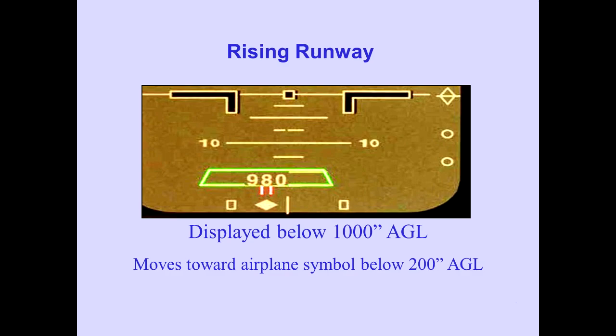Radio altitude is displayed below 2,500 feet AGL. The rising runway is displayed when the localizer pointer is in view and the aircraft is below 1,000 feet radio altitude. The runway symbol moves toward the airplane symbol starting at 200 feet AGL to represent relative altitude.